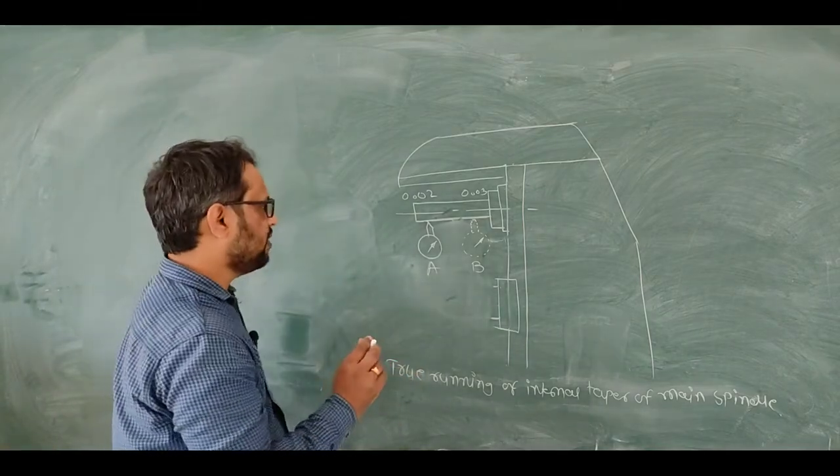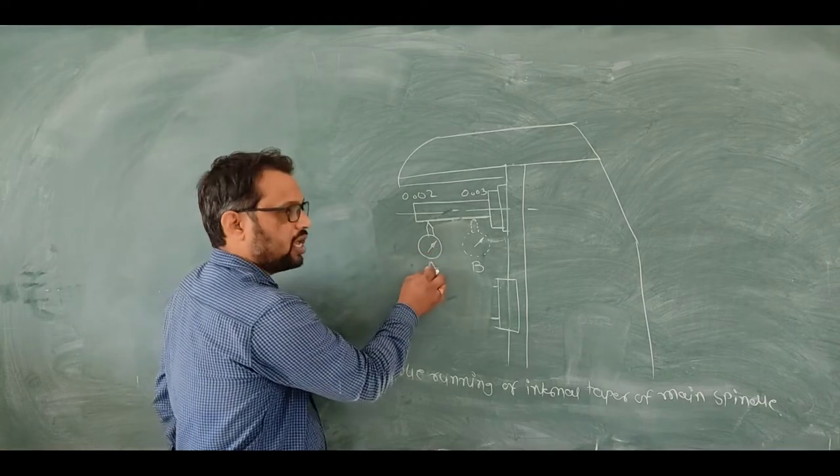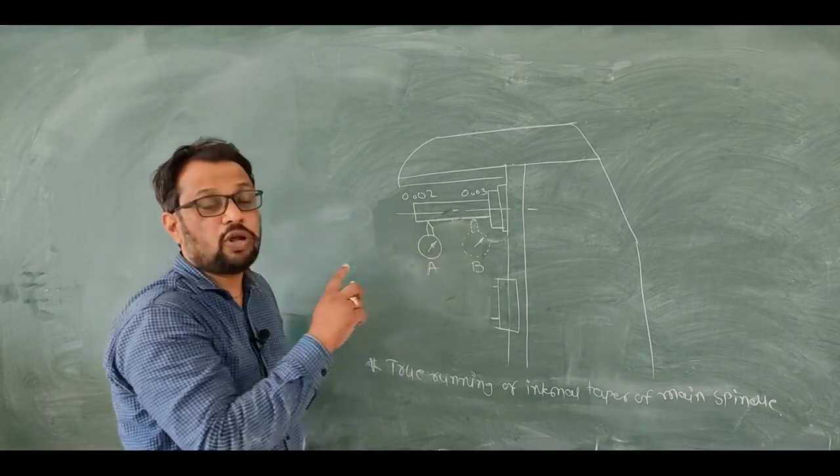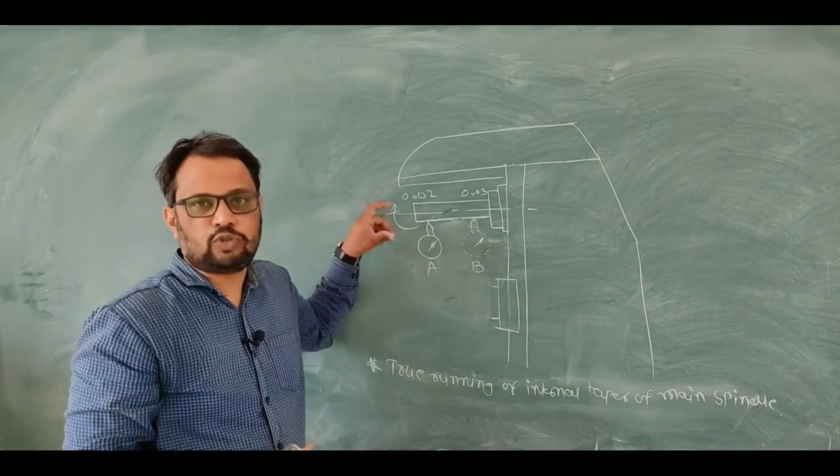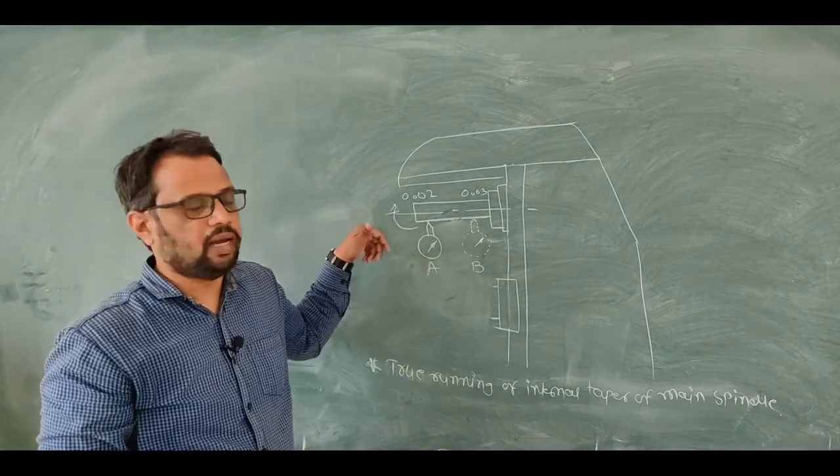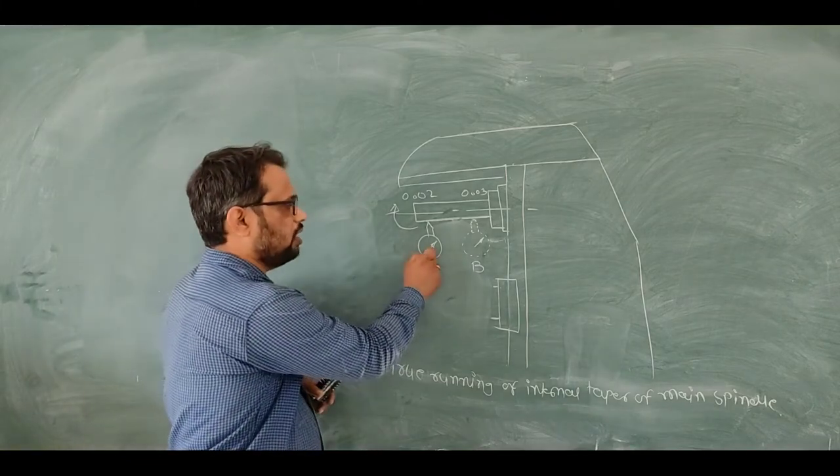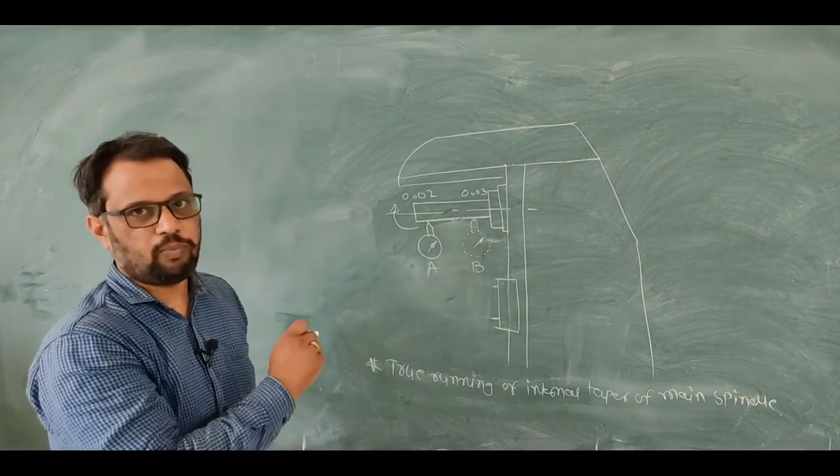Firstly I will put the dial indicator in position A and touch the pointer into your mandrill and rotate. Rotate this mandrill slowly and note the reading at point A.